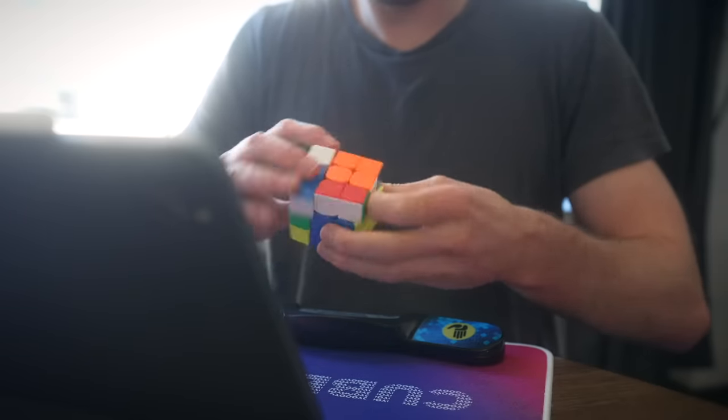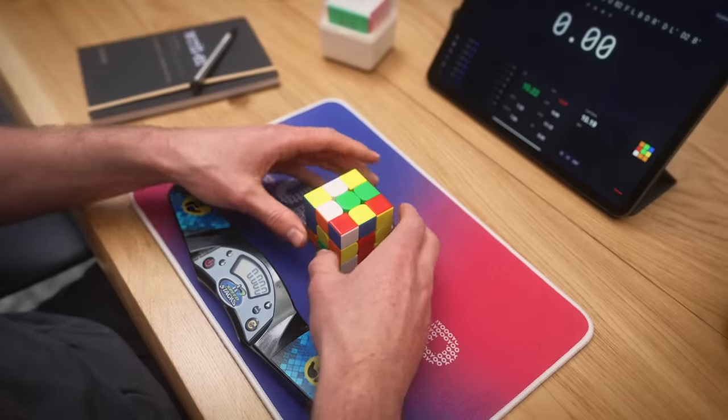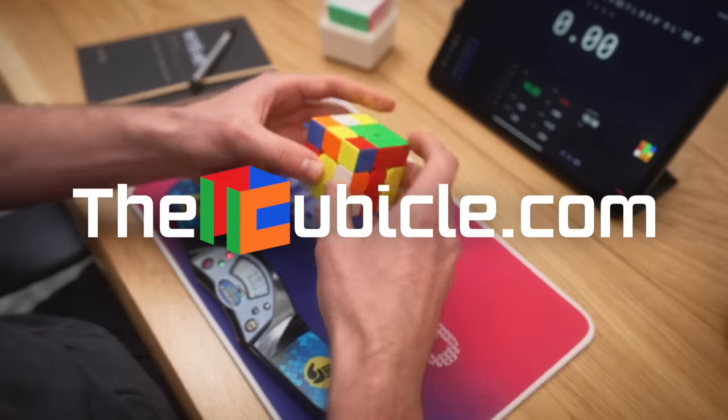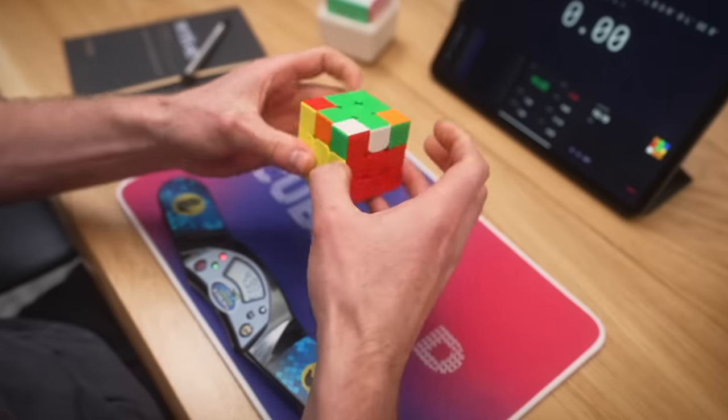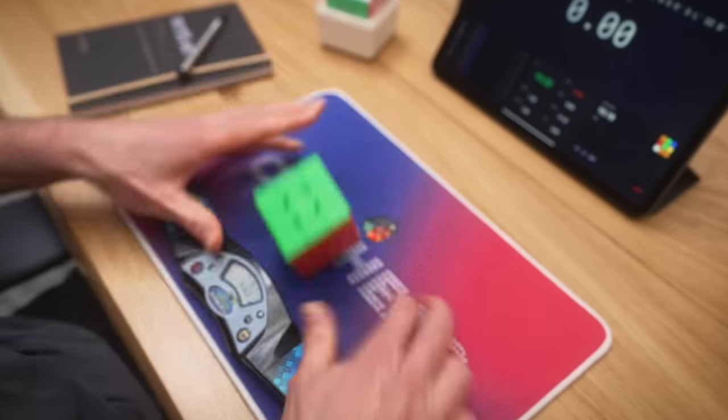Oh yeah, and if you want to get the cube yourself, check out the links in the description, buy it on the best site on the world wide web, The Cubicle, and use the OG discount code CUBEPAD for a huge discount, as well as a free CubeHead logo. And I'll see you in the next video. Ciao.